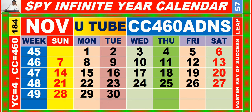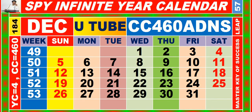Calendar for the month of November having calendar code equal to 4-6-0. Calendar for the month of December having calendar code equal to 4-6-0.